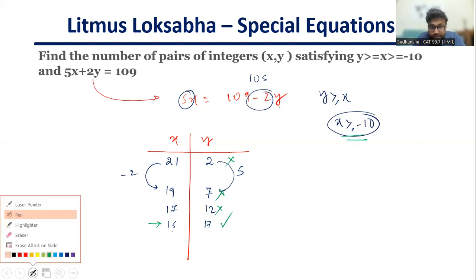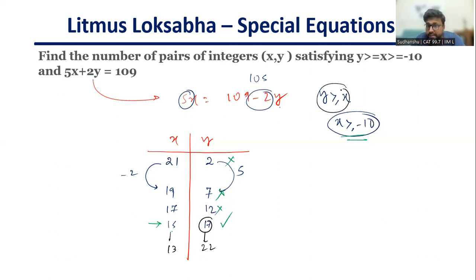What will happen after this? After this, y will keep on increasing, so y will become 17 plus 5 which is 22 and x will become 13, which is also an acceptable solution. Now we know that y is greater than or equal to x has been achieved. Now I have to look at this: how can I quickly achieve this? Think about it. This number will keep on reducing, this number will keep on increasing, so y greater than or equal to x is sorted.